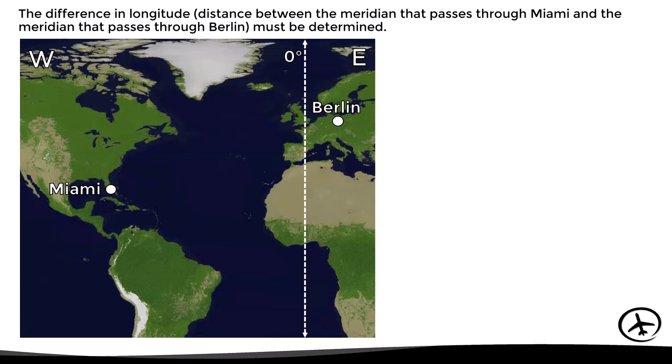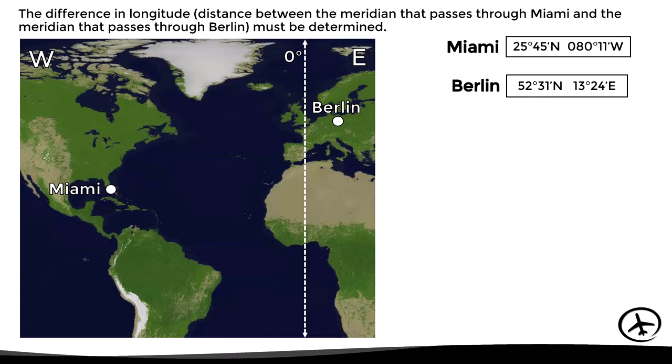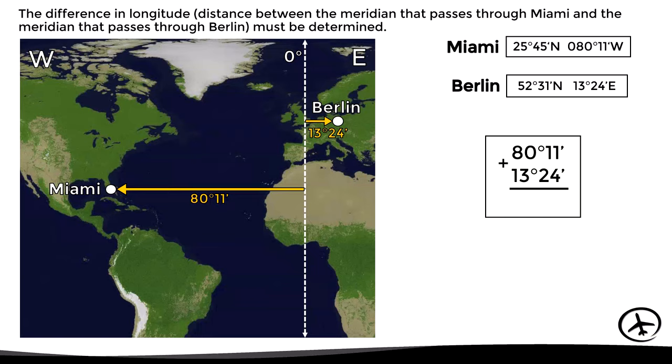First, we have to determine the difference in longitude — the distance between the meridian that passes through Miami and the meridian that passes through Berlin in degrees, minutes, and seconds of arc. Miami is 80 degrees and 11 minutes west of the prime meridian, while Berlin is 13 degrees and 24 minutes to the east. Since the points are on different hemispheres, we add the longitudes, obtaining a difference of 93 degrees and 35 minutes.